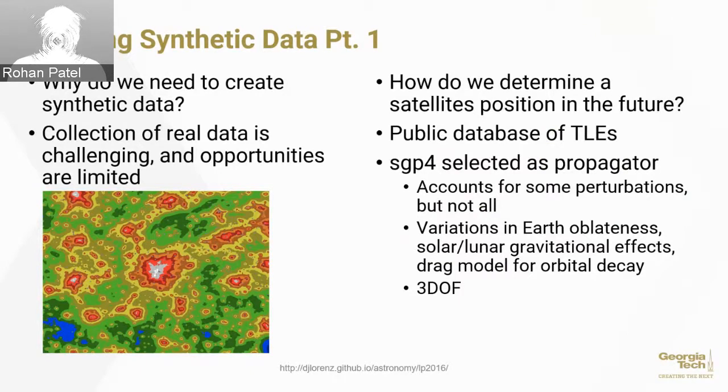So we create synthetic data, which means we determine the satellite's position in the future. We do that using TLEs or two line elements, which tell you about a satellite's orbit and its position in that orbit. We propagate into the future using SGP4, which is a three degree of freedom propagation model and includes some perturbations. It's got variations in Earth's oblateness, some solar and lunar gravity effects, a drag model for orbital decay. It is not by any means the most accurate propagator, but it is quick and we can use it to create a huge amount of data.